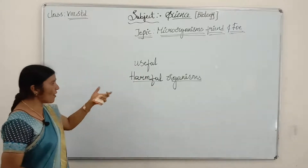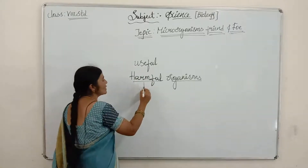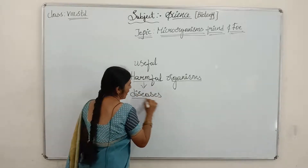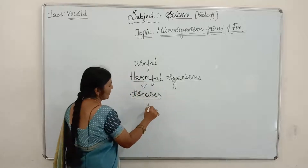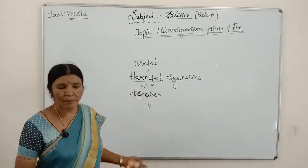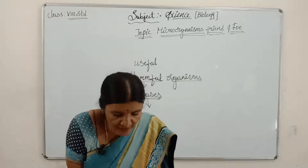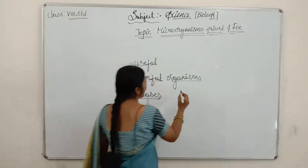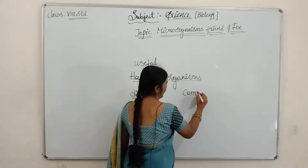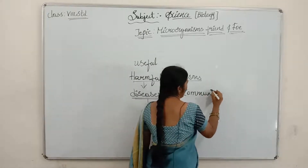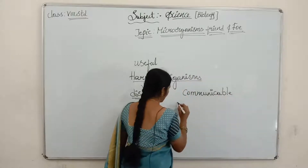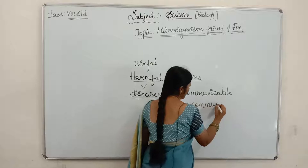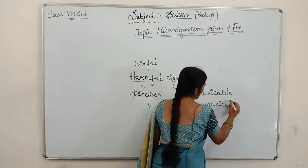Harmful microorganisms cause diseases for humans. Talking about diseases, we can distinguish two different kinds: communicable and non-communicable diseases.